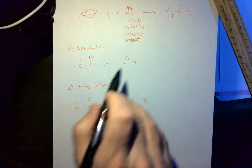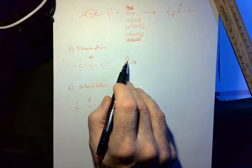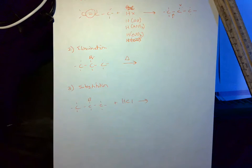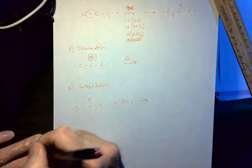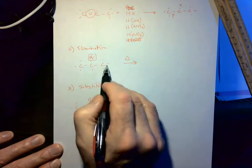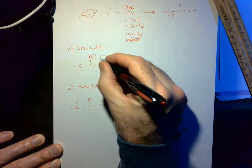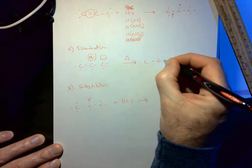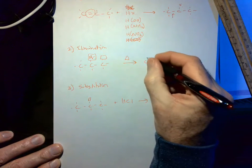Elimination is just the opposite. That triangle means heat. What we're doing is we're getting rid of something. So we're going to get rid of the Br plus we're going to get rid of a hydrogen on a neighboring carbon. It doesn't matter which one. So let's take a hydrogen from there. So what we do here is we make a double bond.